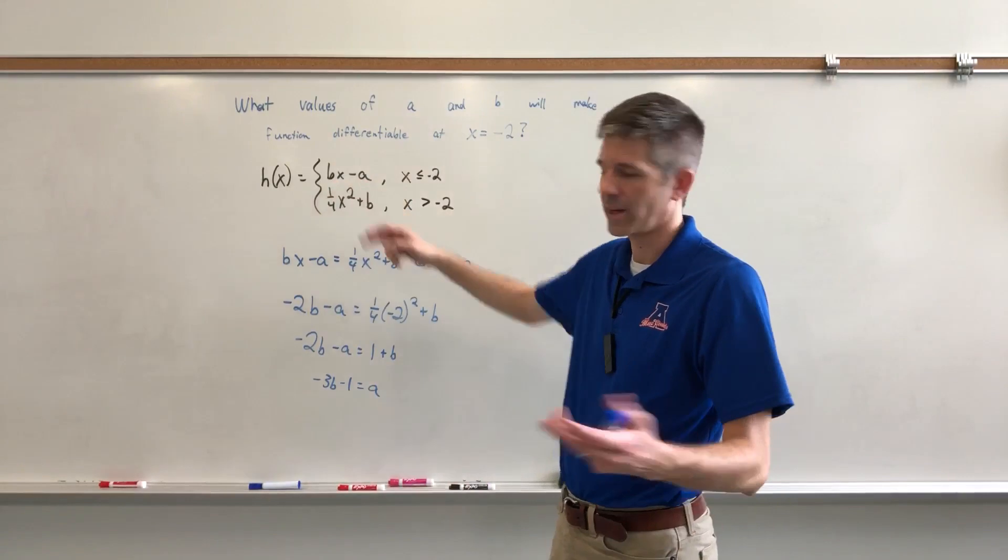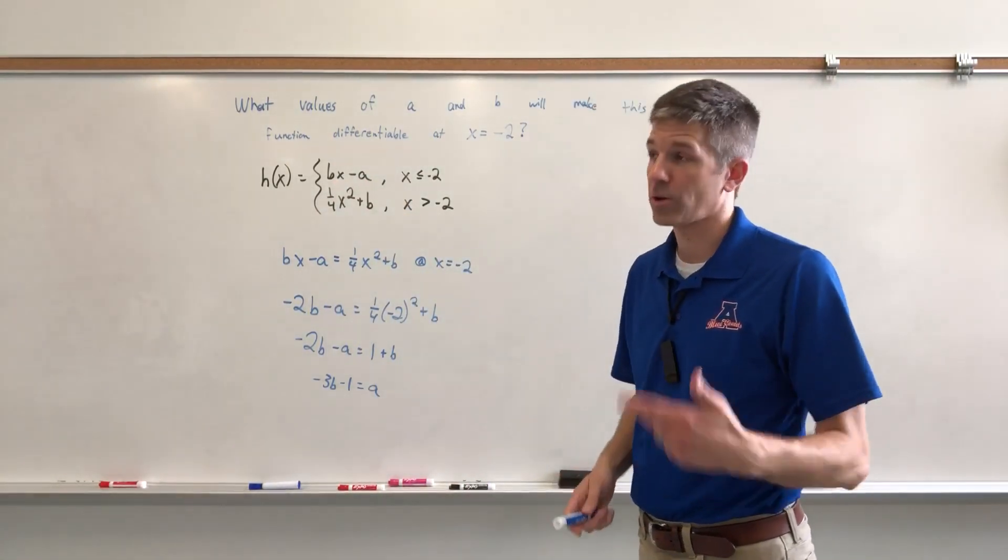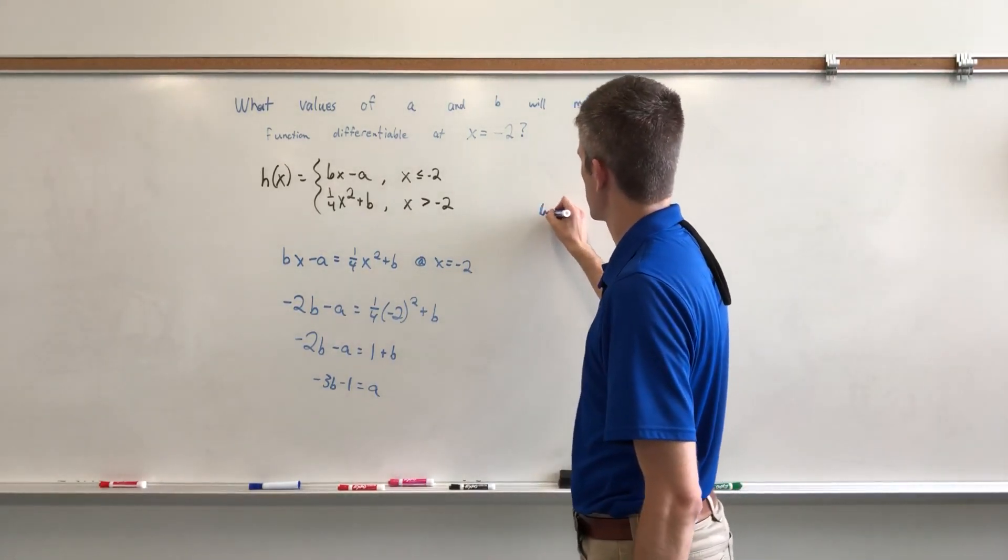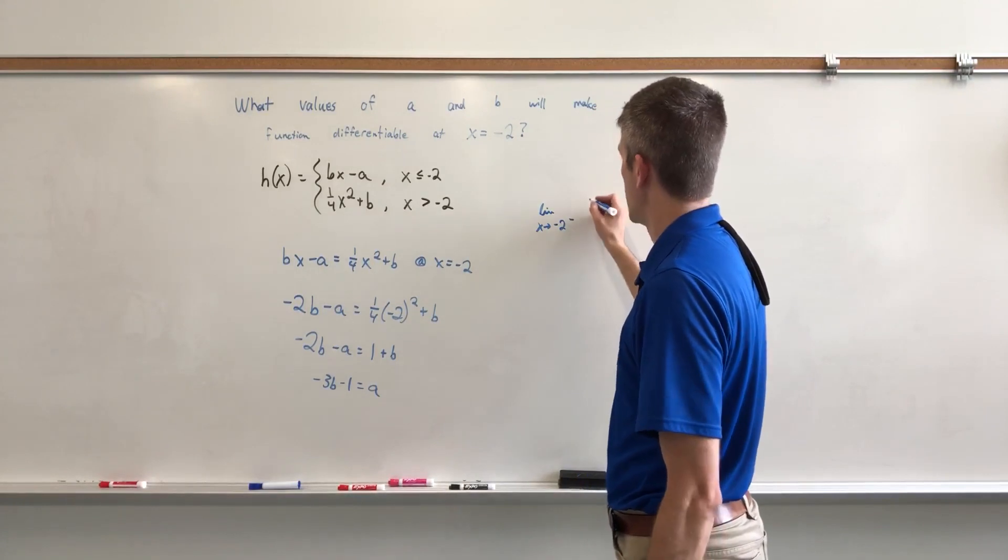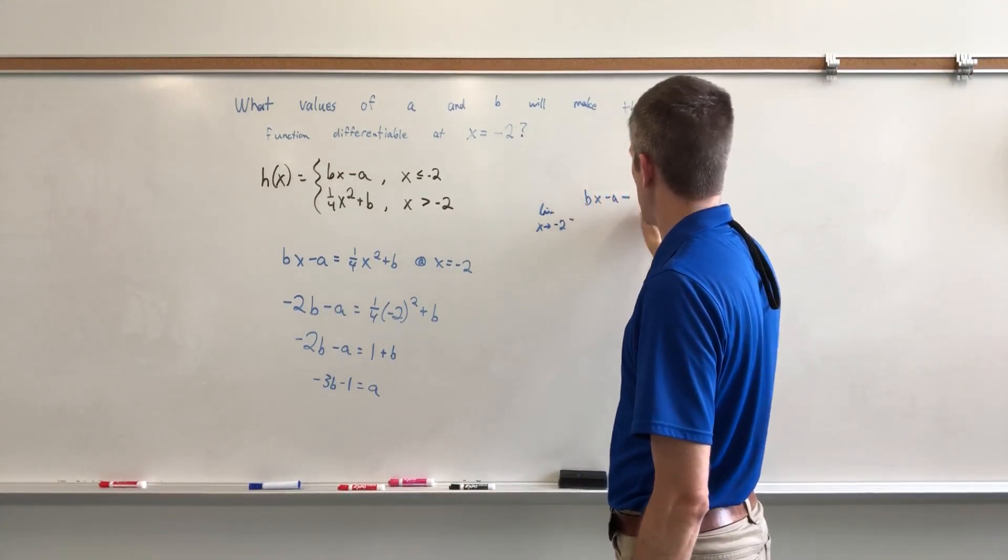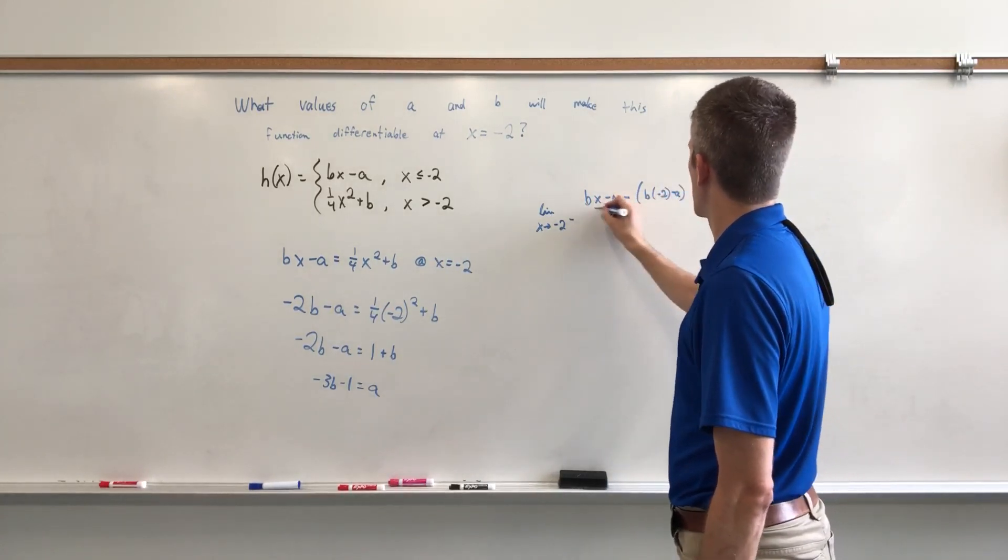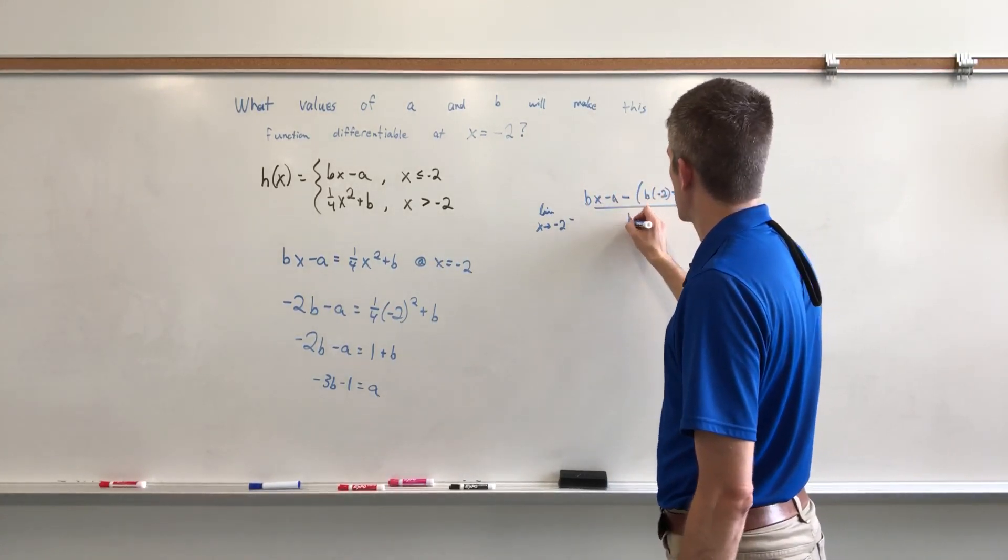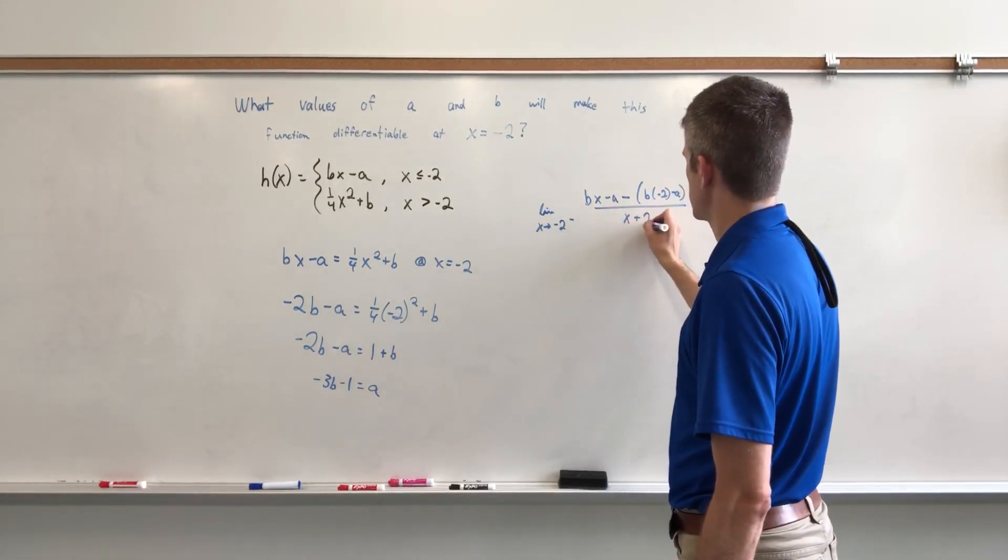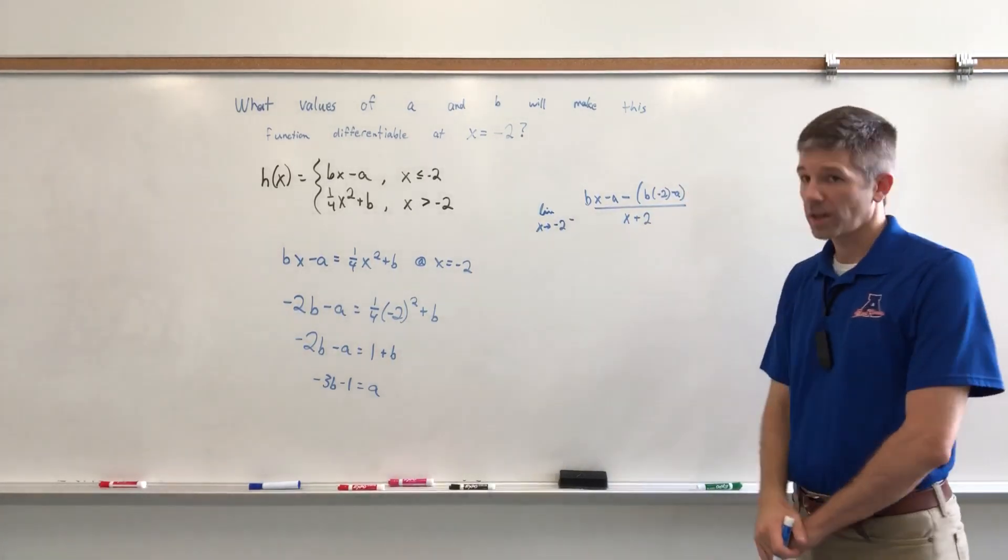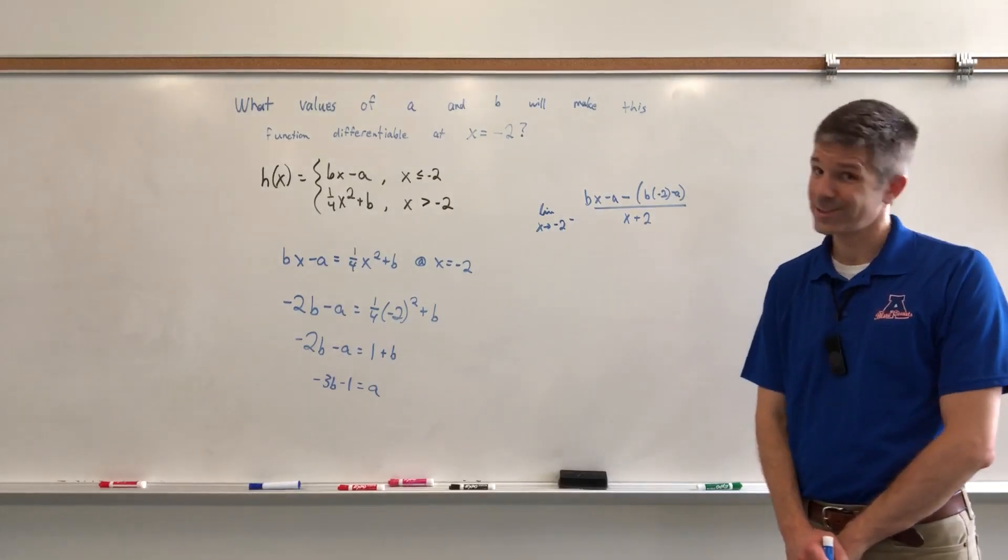So what I want to do is check for differentiability or create differentiability by doing the limit as X approaches negative 2 from the left of BX minus A minus B times negative 2 minus A, all divided by X minus negative 2. Trust me on this. You're going to end up with B. It's going to happen.